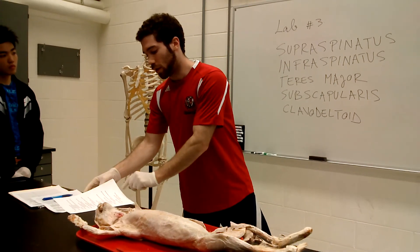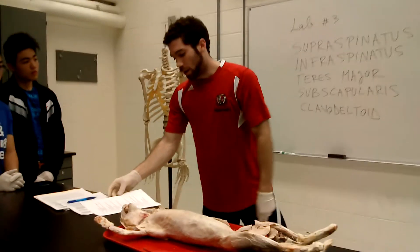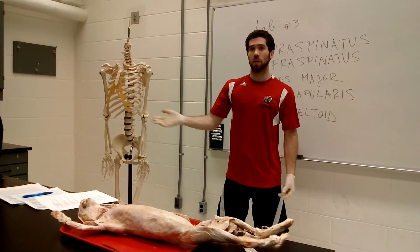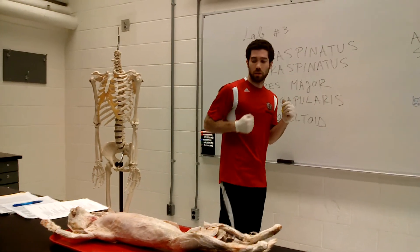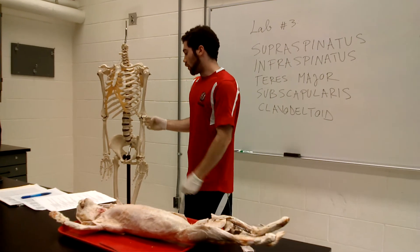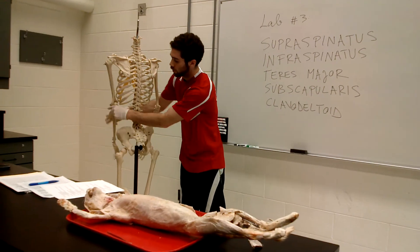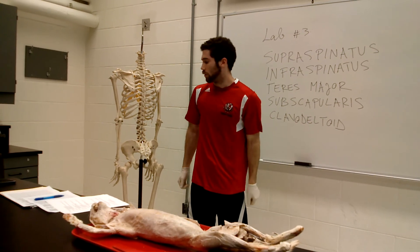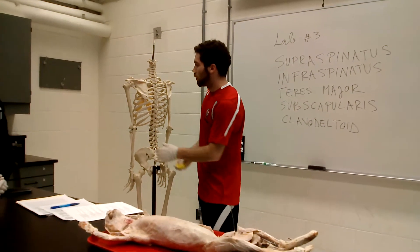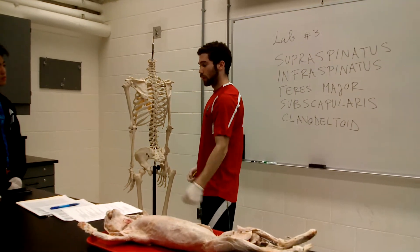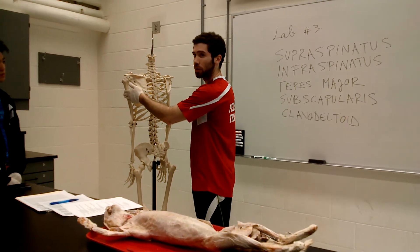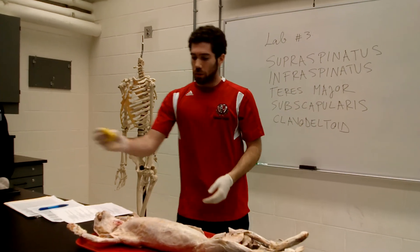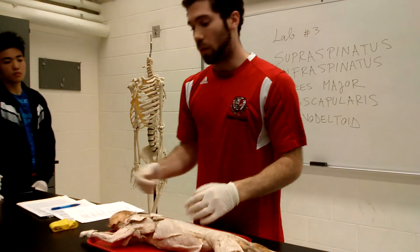The triceps has three heads — long, medial, and lateral. The long head is the only one that crosses the shoulder joint, so it assists with shoulder extension as well as elbow extension. The medial and lateral heads don't cross the shoulder joint and only perform elbow extension. The lateral head originates from the lateral side of the humerus, medial from the medial side. All three heads insert onto the olecranon process — the pointy part of your elbow that you can feel.